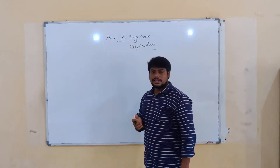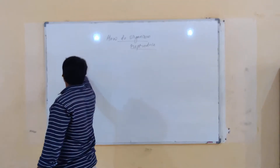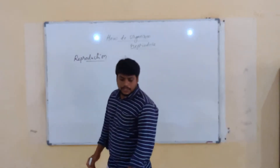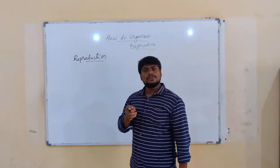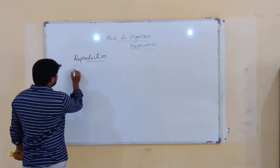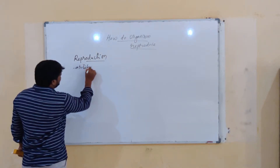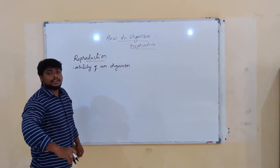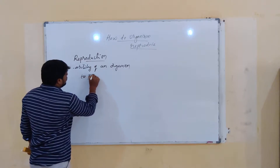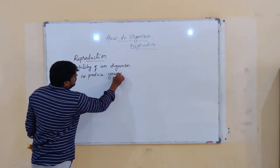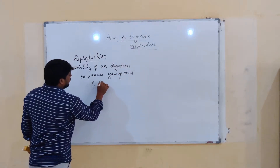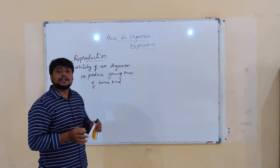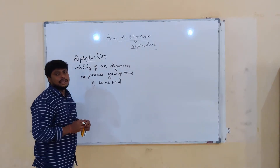In this video we are going to discuss what is reproduction. So, what is reproduction? Reproduction is the ability of an organism to produce young ones of the same kind. They are able to produce offspring which are very similar to the parent. That process is what we call reproduction.